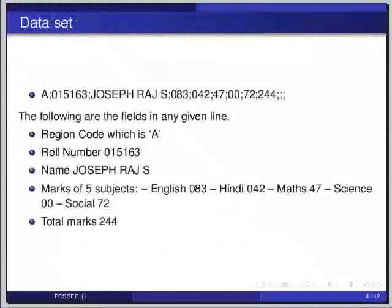Now let us understand what is meant by parsing data. From the input file we can see that the data we have is in the form of text. Parsing this data is all about reading it and converting it into a form which can be used for computations. In our case it will be a sequence of numbers. We can clearly see that the problem involves reading the files and tokenizing.